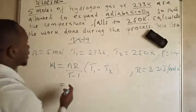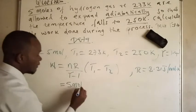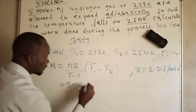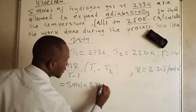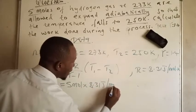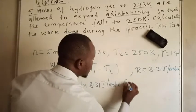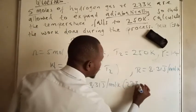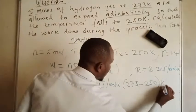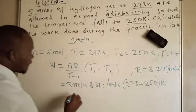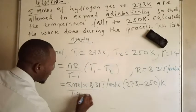From here, let's just plug in the values. What I'm going to have here is 5 moles times 8.31 joules per mole per Kelvin, then times (273 minus 250) Kelvin, over here we have 1.4 minus 1.